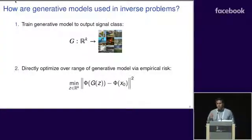When I talk about generative models, I'm going to be focusing on latent variable models, such as VAEs and GANs. In order to utilize this approach, what you first need to do is train a generative model to output a certain image class. These are images that your image of interest looks like.